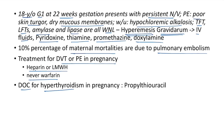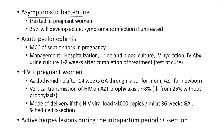Asymptomatic bacteriuria should be treated in pregnant women because 25% of pregnant women with asymptomatic bacteriuria will develop acute symptomatic infection if untreated, which can lead to acute pyelonephritis — the most common cause of septic shock in pregnancy. Management of acute pyelonephritis: hospitalization, urine and blood culture, IV hydration, IV antibiotics, and urine culture 1 to 2 weeks after completion of treatment (test of cure).